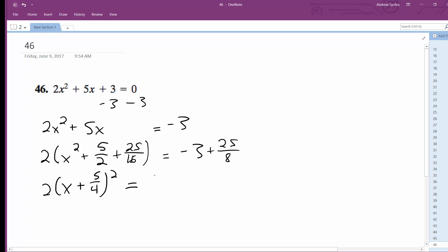It becomes 1 over 8. And 5 by 2. And I get x plus 5 over 4 squared equals 1 over 16.